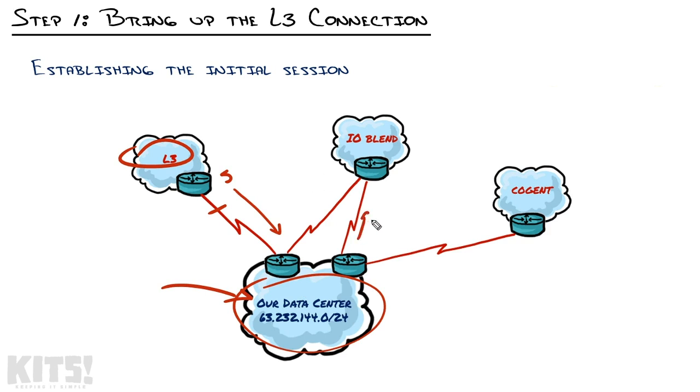So we want to advertise that network to these other carriers using BGP, so that if Level 3 goes down, the world can still reach these services. The best place to start is with the primary carrier. Task number one will be to convert this from a static route into a BGP session, then we can turn our attention to these other carriers.